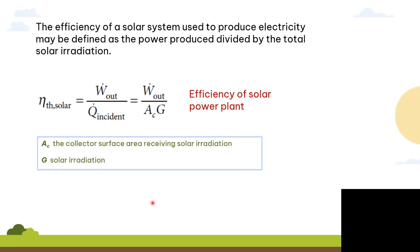Here is the efficiency for the solar system used to produce electricity. It is defined by the power produced divided by the total input. The solar irradiance G depends on the collected surface area receiving solar irradiation.